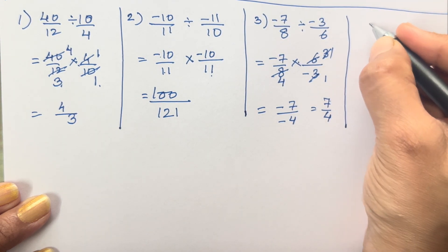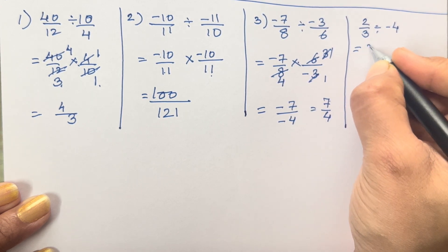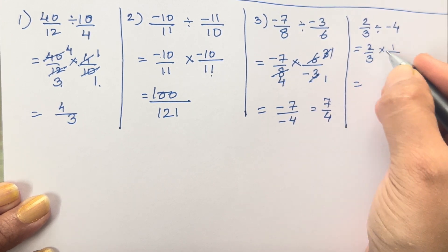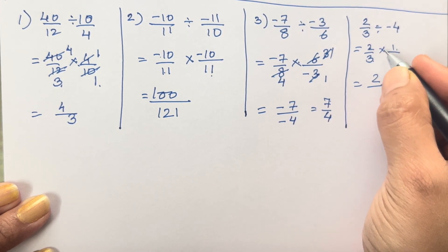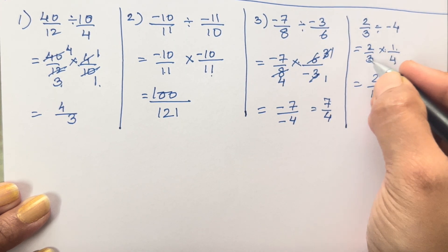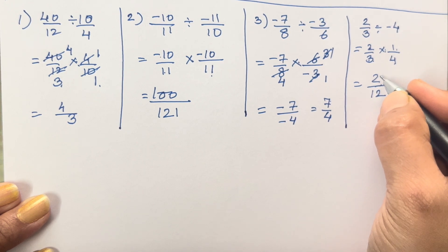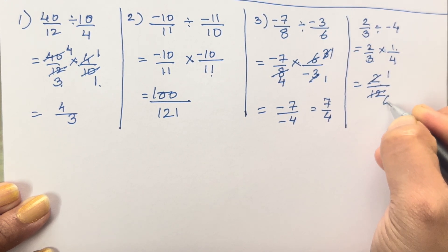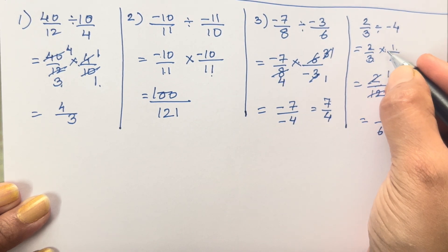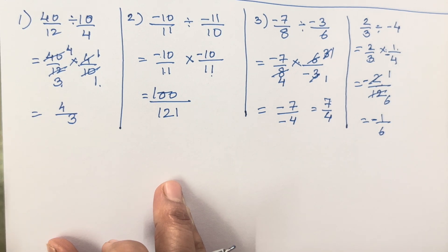The fourth sum is 2 upon 3 divided by minus 4. This becomes 2/3 multiplied by 1 upon −4, giving 2 × 1 = 2 over 3 × 4 = 12. Simplifying 2/12 by dividing by 2 gives 1/6. With the minus sign, the answer is minus 1 upon 6.